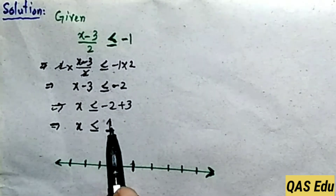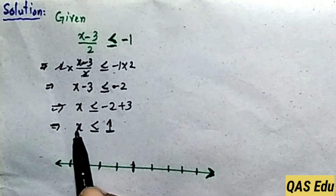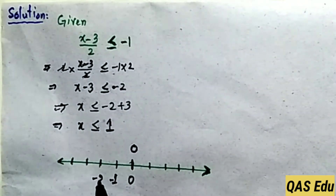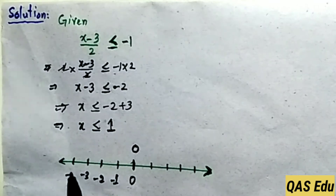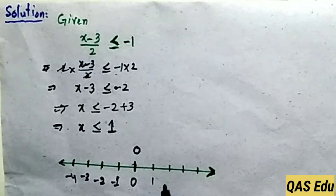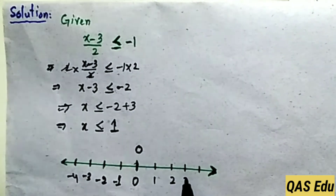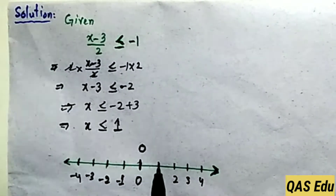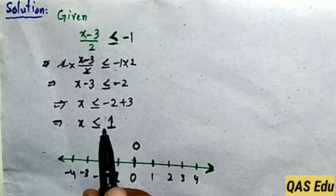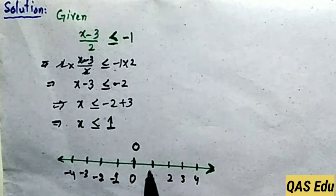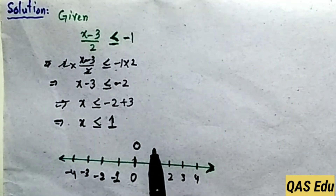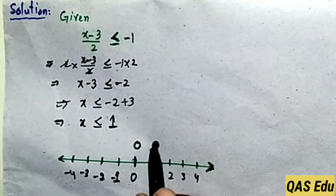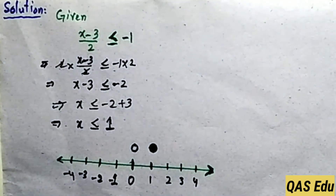Note that x is also equal to 1, so x equals 1 is included. Numbers less than 1 go to the left side (negative direction), and numbers greater than 1 go to the right. Since x is less than or equal to 1, draw a filled circle at 1.